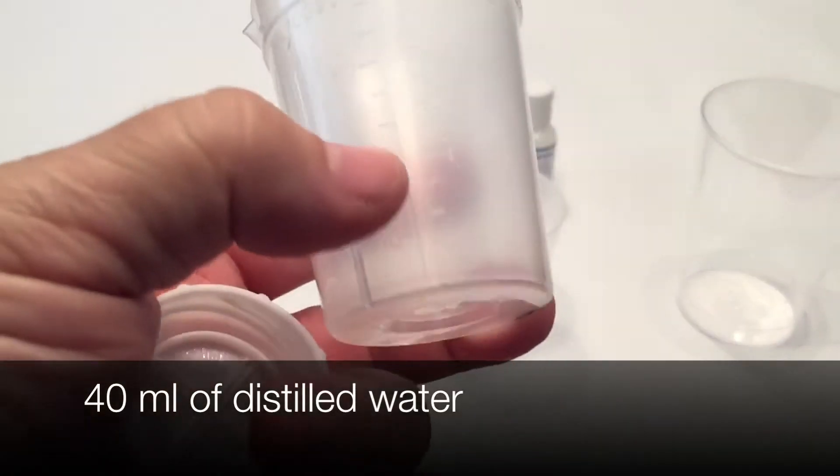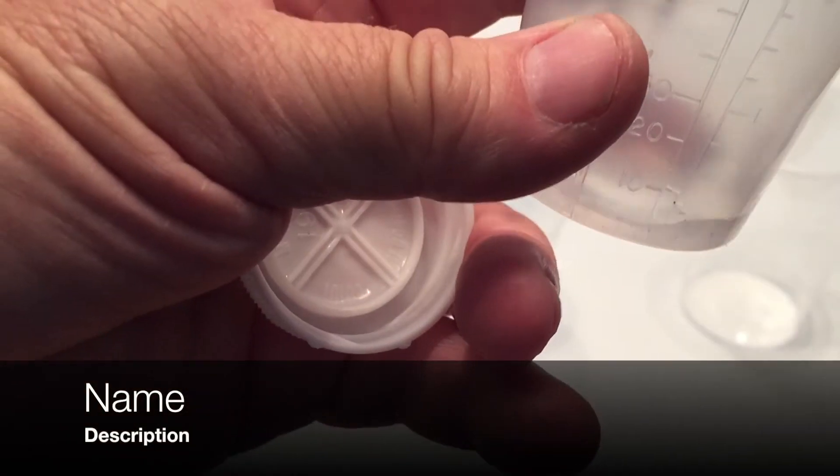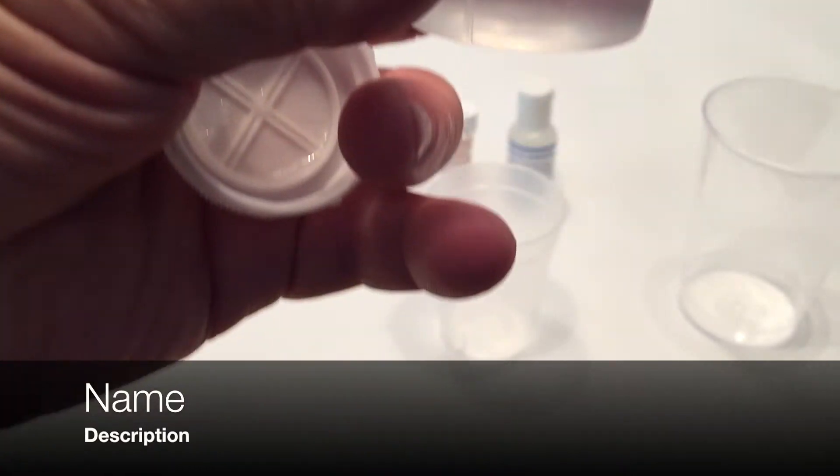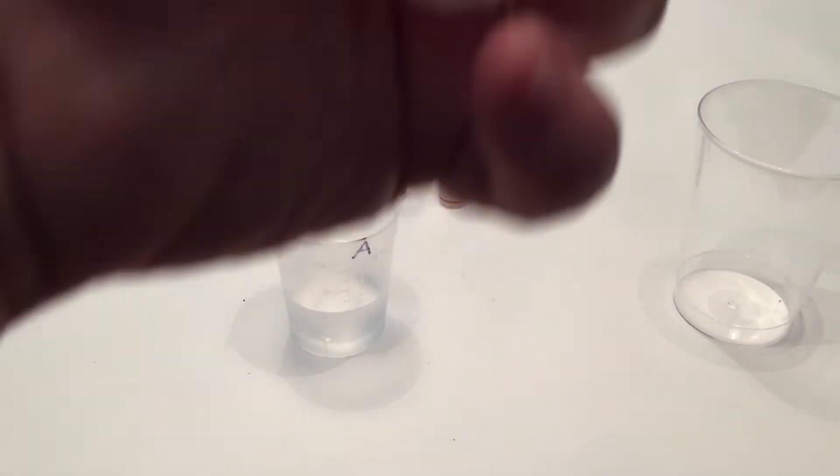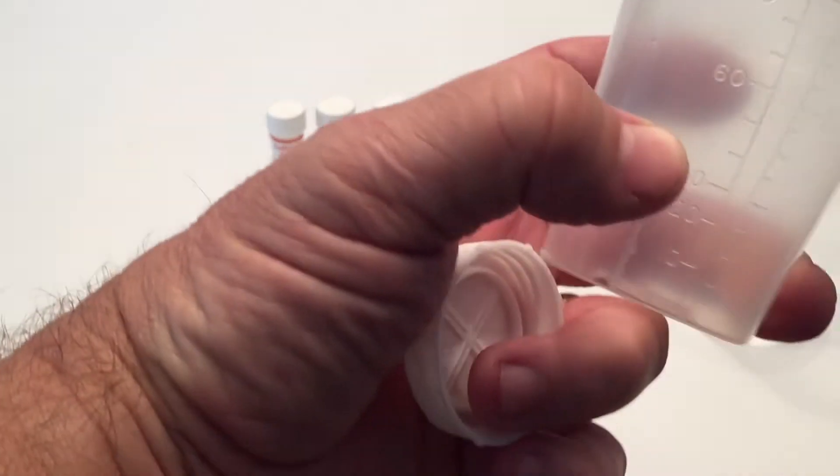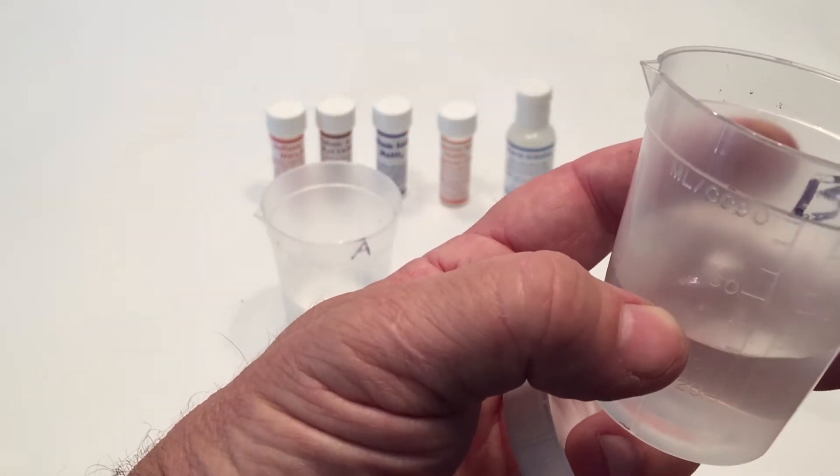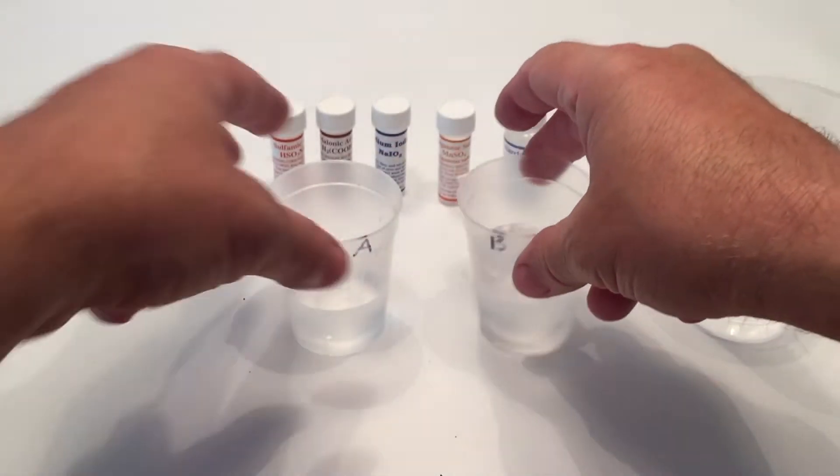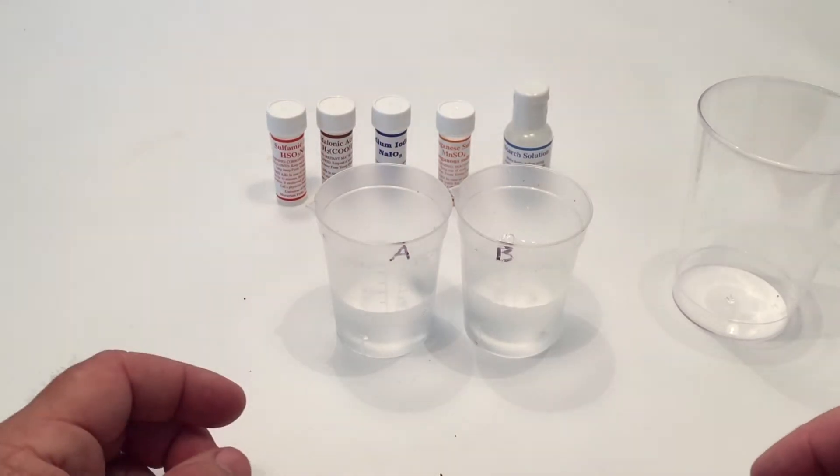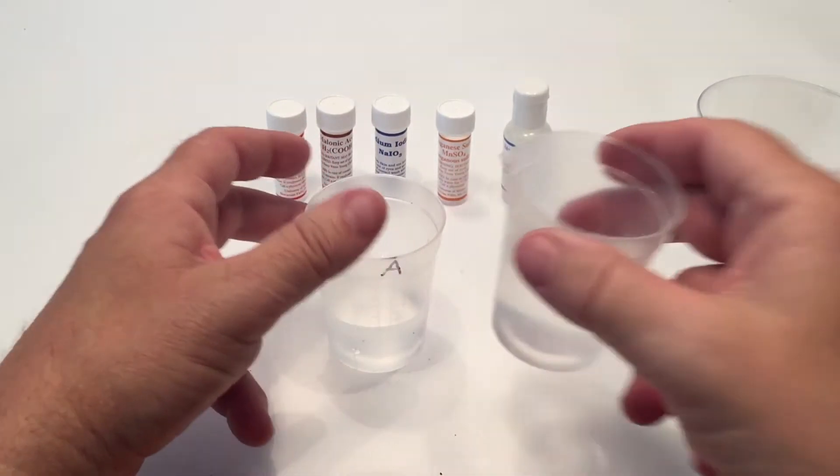This is a really fun experiment. So to set it up, we need to have two different glasses marked A and B because we're going to mix two different solutions together. I'm putting 40 milliliters of distilled water in cup A and in cup B, I'm going to put 40 milliliters of hydrogen peroxide. And then we're going to put some chemicals in each one of them, which I'll be going over that comes in the kit. And then we're going to mix them together and a really cool thing's going to happen that you're going to really love.